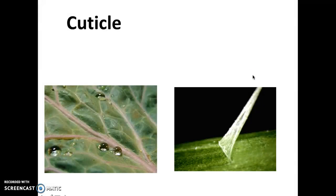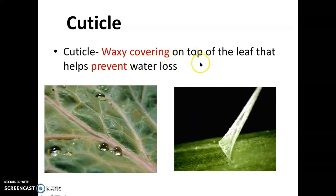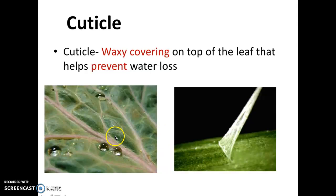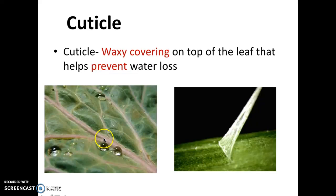A little bit about the cuticle layer of the plant: on the leaves you have this thing called a cuticle, which is a waxy covering on top of the leaf that helps prevent water loss. Like I said, 90% of the water will be lost to the environment, but plants actually try to prevent this by having this cuticle layer — basically like skin — that helps prevent water loss.